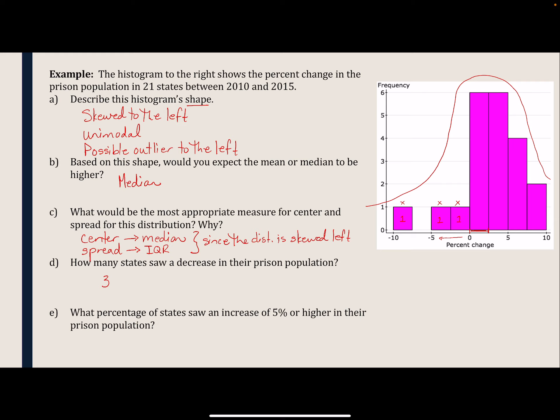Part E asks for the percent of states that saw an increase of five percent or higher. Five percent or higher covers two bins. From 5 to 7.5 there were four states, and from 7.5 to 10 there were two states. So six out of the 21 states saw an increase of five percent or higher. When we calculate that percent, we get 28.6%.